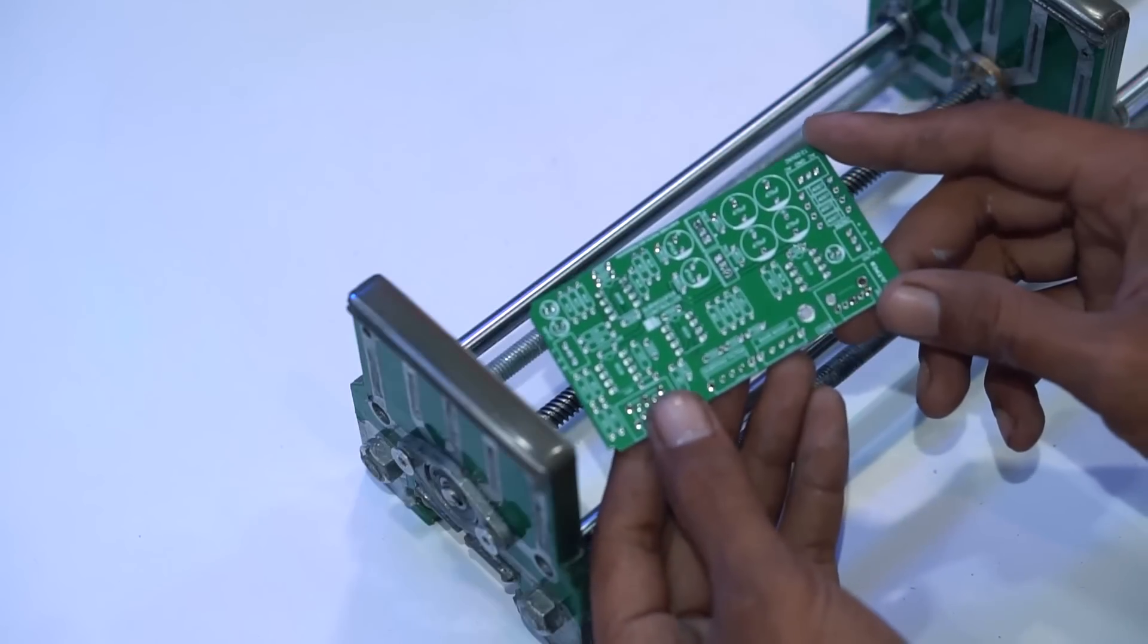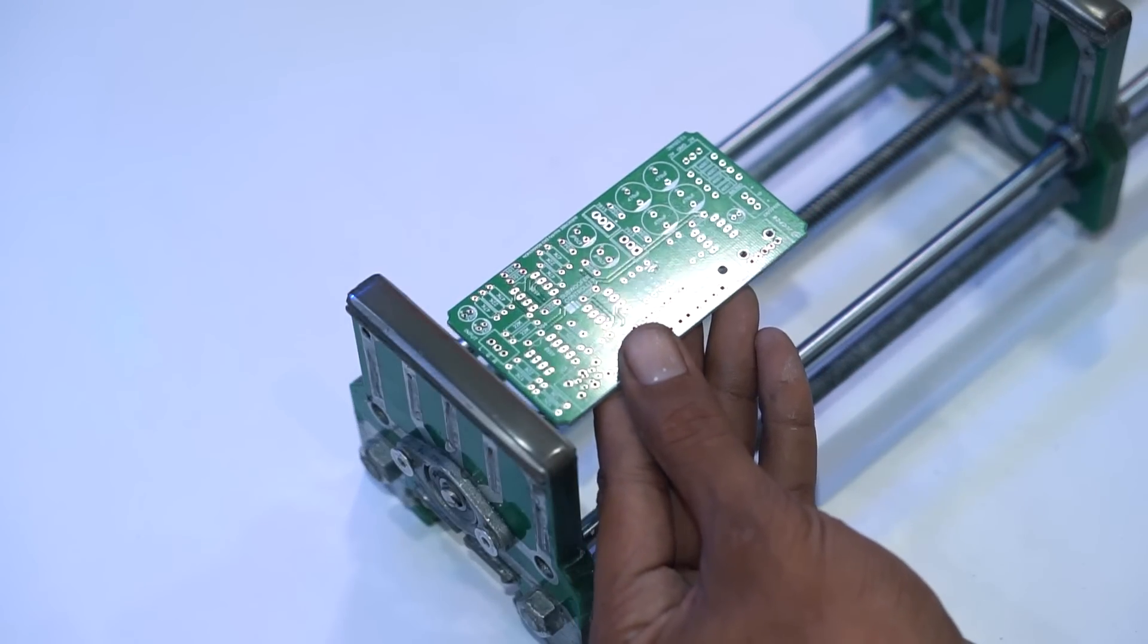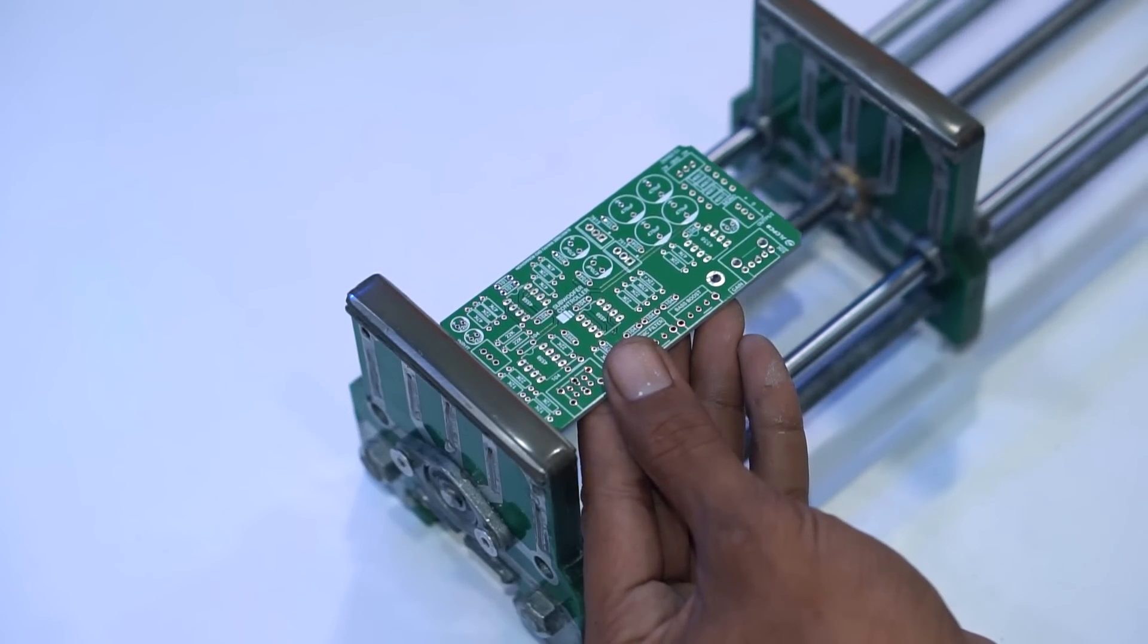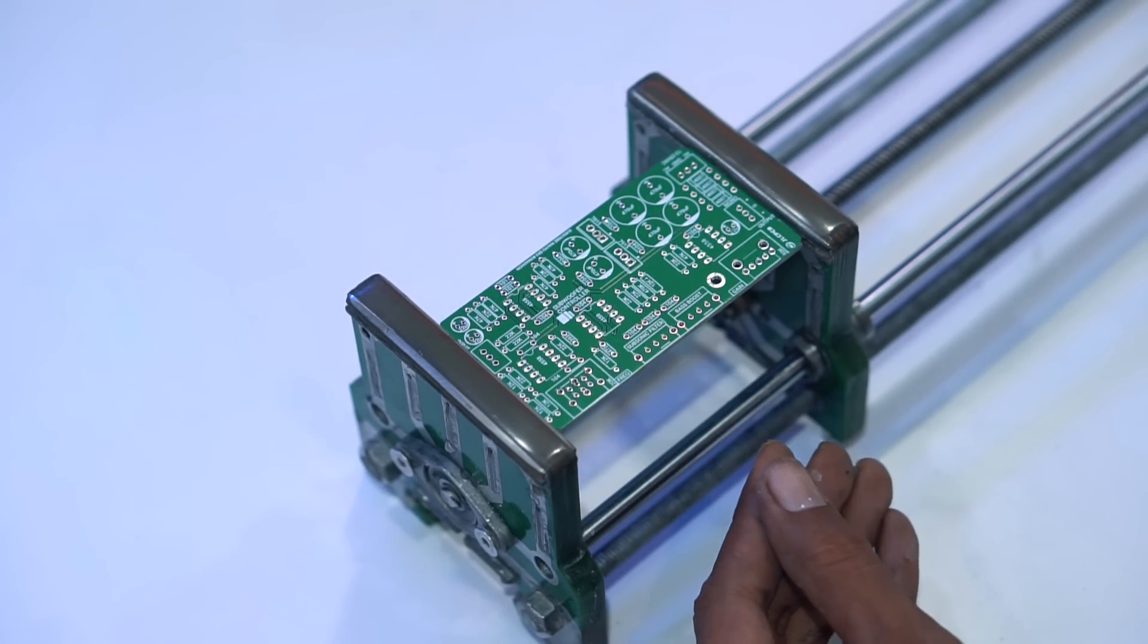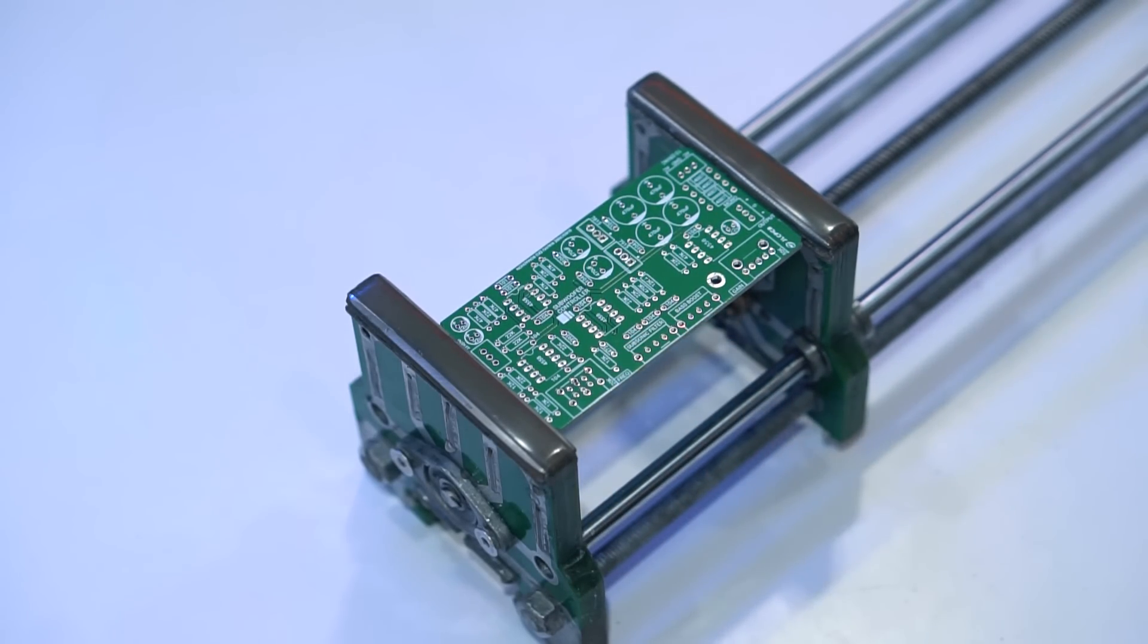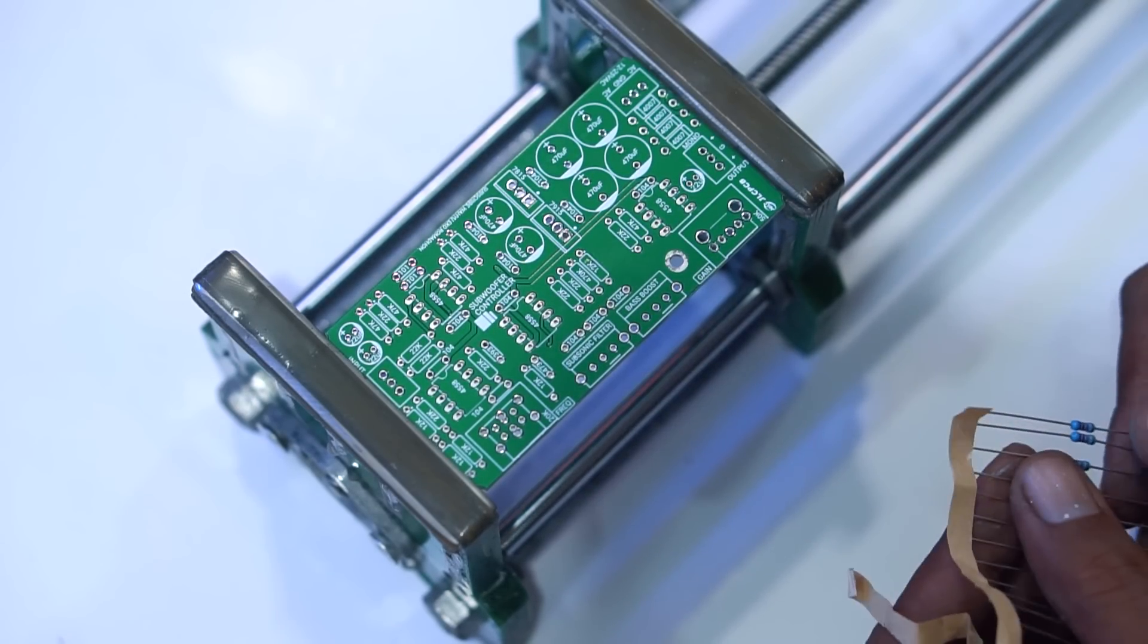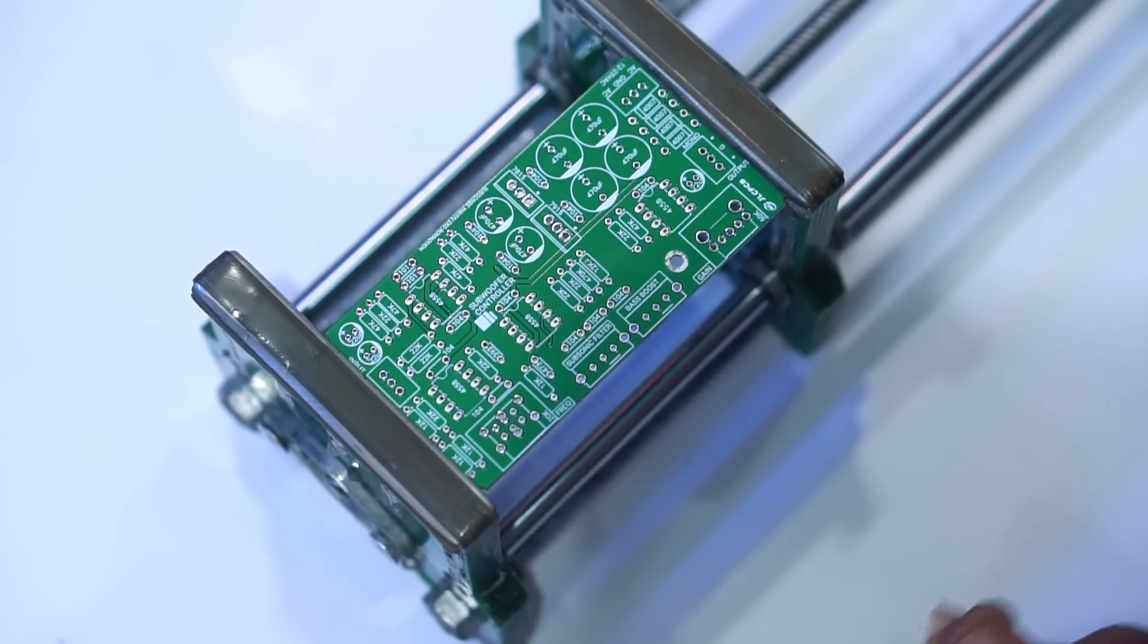Okay, we continue to assembly. Install the components according to the labels on the PCB. And for those who want to order the PCB directly, I also sell it at Tokopedia. For the link, you can visit the description.